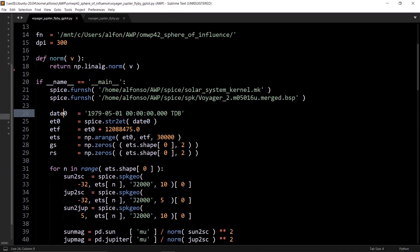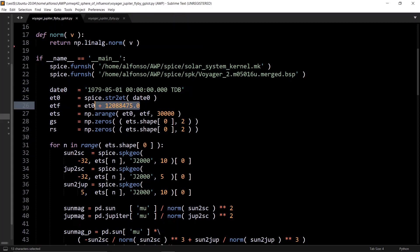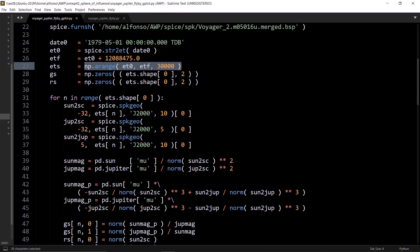Define an initial date of 1979 May 1, turn that into ephemeris time, and then propagate for some amount of time. Create an array of ephemeris times, and then some empty arrays. The important part here is that for each ephemeris time, so for each time step, we want the Sun-to-spacecraft vector, the Jupiter-to-spacecraft vector, and then the Sun-to-Jupiter vector.